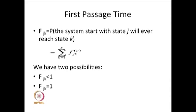I am going to give the next concept called the First Passage Time Distribution. First Passage Time Distribution is written with the suffix f_jk — that is nothing but what is the probability that the system starting with state j will ever reach state k.